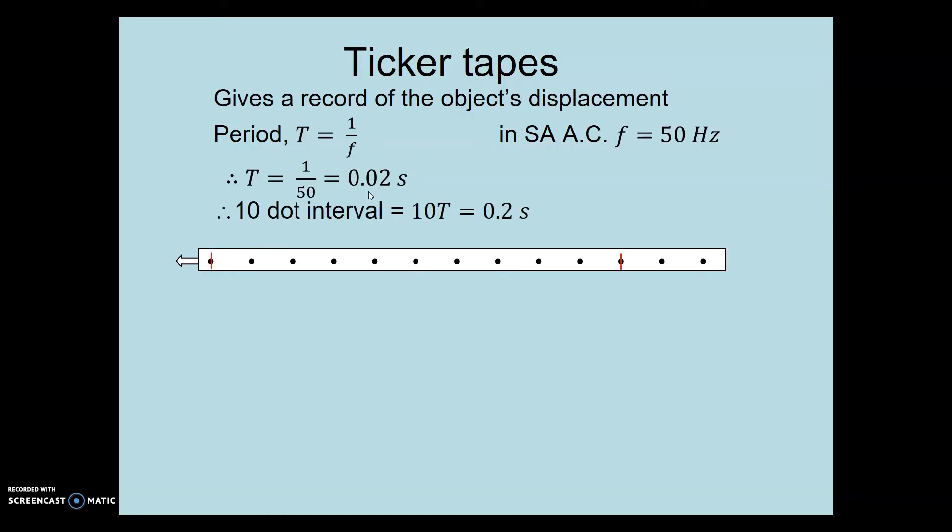So the period between dots is 1/50th or 0.02 seconds. Because these distances are very small, we prefer to use 10-dot intervals, which gives a time of 0.2 seconds between these two marked points.